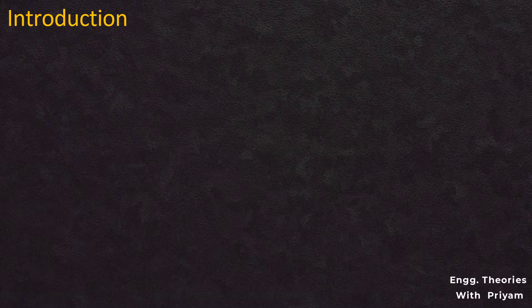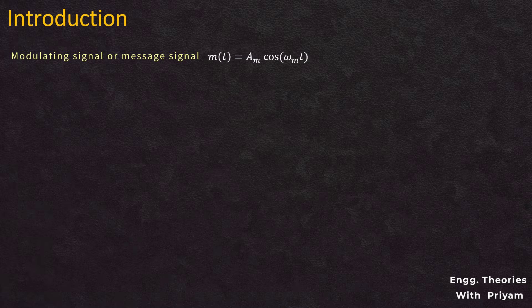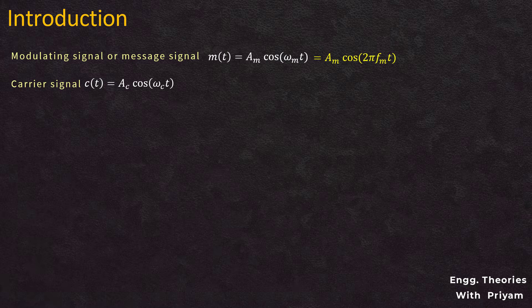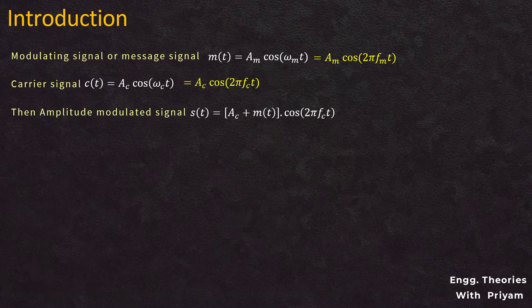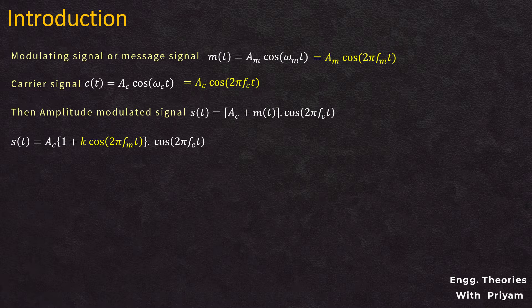In this lecture on analog communication, we will understand the importance of the modulation index in amplitude modulation. If the modulating signal mt = am·cos(2π·fm·t) and the carrier signal ct = ac·cos(2π·fc·t), then the amplitude modulated signal st = ac·[1 + k·cos(2π·fm·t)]·cos(2π·fc·t), where k is defined as the modulation index.